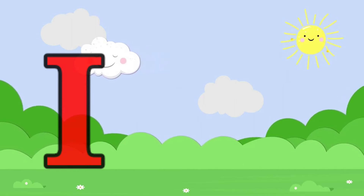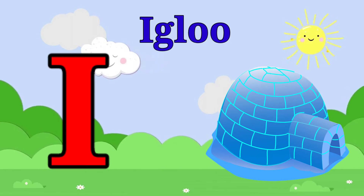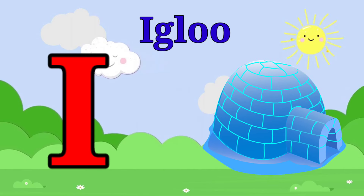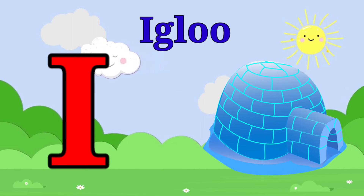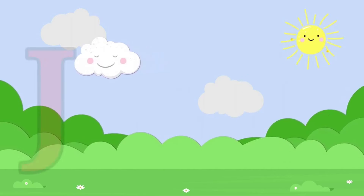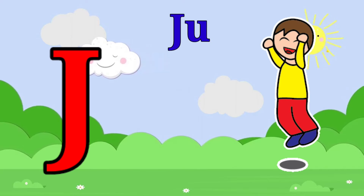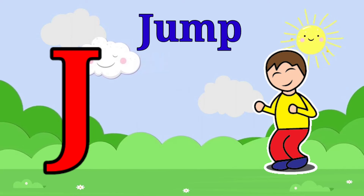I is for igloo, i-i-igloo. J is for jump, j-j-jump.